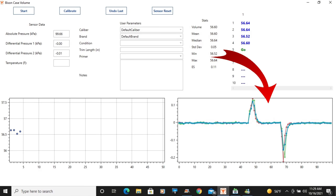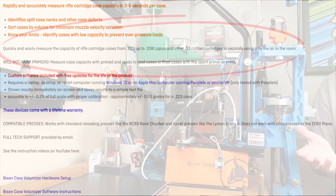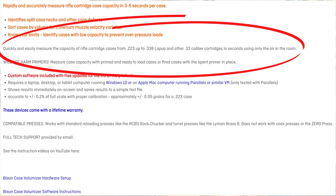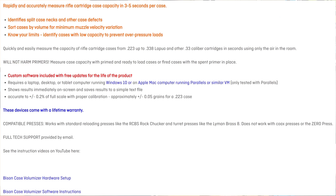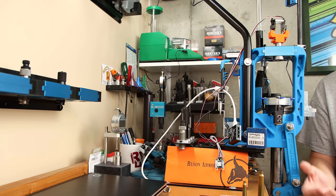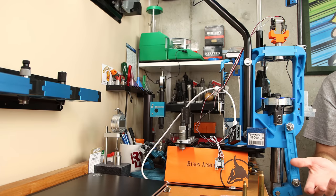Another thing it mentions is identifying split case necks and other defects. It says we can quickly and easily measure the capacity of rifle cartridges from .223 all the way to .338 Lapua and other .33 caliber cartridges in just seconds using only the air in the room and compressed air.